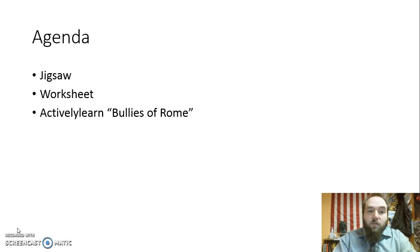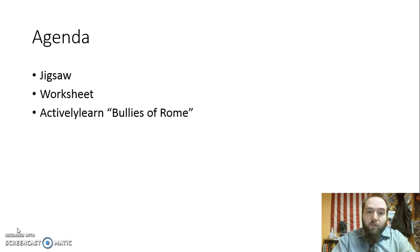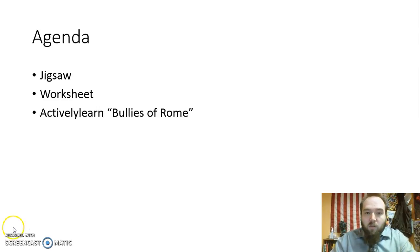Alright, so here's our agenda. First thing you're going to do is do a jigsaw — we've done this several times this year. Each group is going to get a different reading from the book. You're going to find the important facts and then we're going to bring it all together. So first thing we're going to have the sub do is make sure everyone knows their parts.